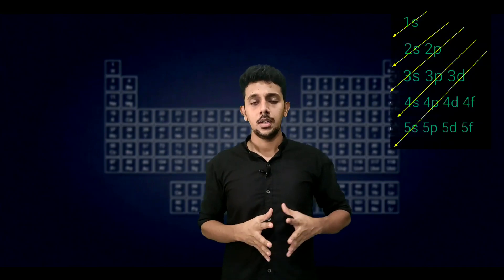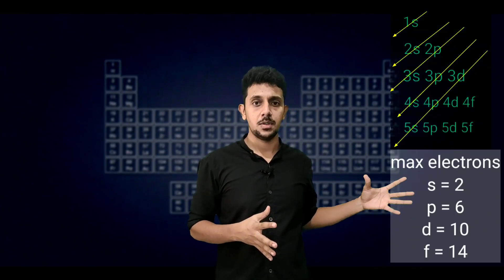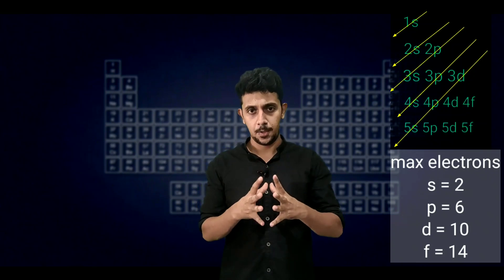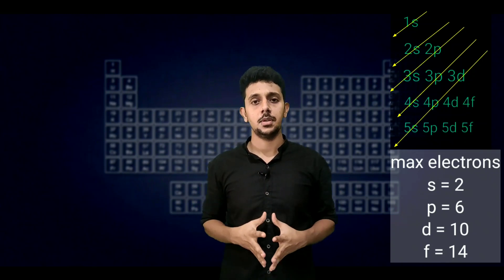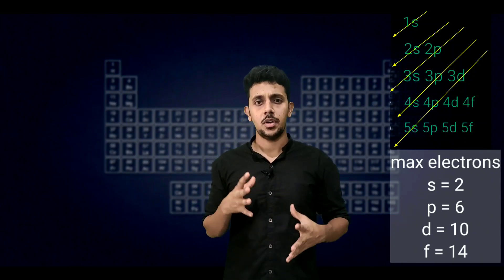In the previous class we learned how to write subshell electronic configuration. At the beginning, the subshell energy increasing order — the maximum number of electrons in each subshell.